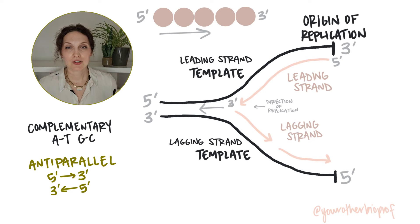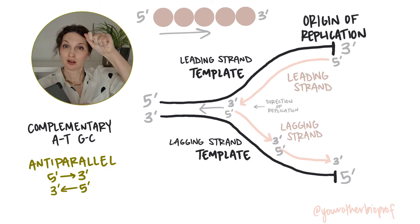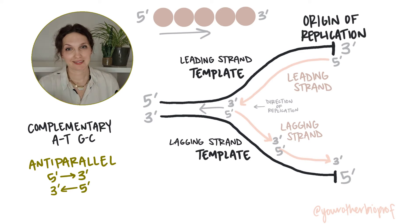The lagging strand is oriented five prime to three prime away from the fork. Now we can still only add on to that three prime end. So what that means for the lagging strand is that we have to open up the replication fork a good amount, then we can add a little fragment. Then we have to wait for it to open up some more, add a fragment.